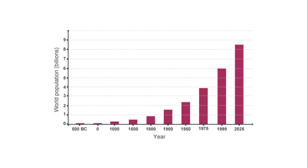In 1820, the world population was about 1 billion, and after 150 years, in the 1970s, the world population reached 3 billion. In 1999, in less than 30 years, the population doubled to 6 billion. The sudden increase in population is called population explosion. The reasons for the rapid growth of world population were availability of advanced medical facilities and large-scale food production.